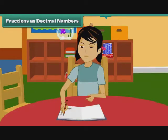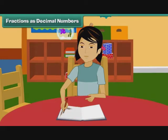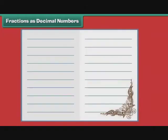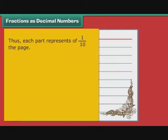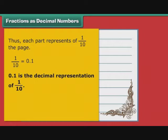Fractions as Decimal Numbers. Arpita is busy decorating the pages of her personal diary. The lines on a page of her diary divide the page into 10 equal parts. Thus, each part represents 1 by 10 of the page. 1 by 10 can also be written as 0.1. Therefore, we can say that 0.1 is the decimal representation of 1 by 10.